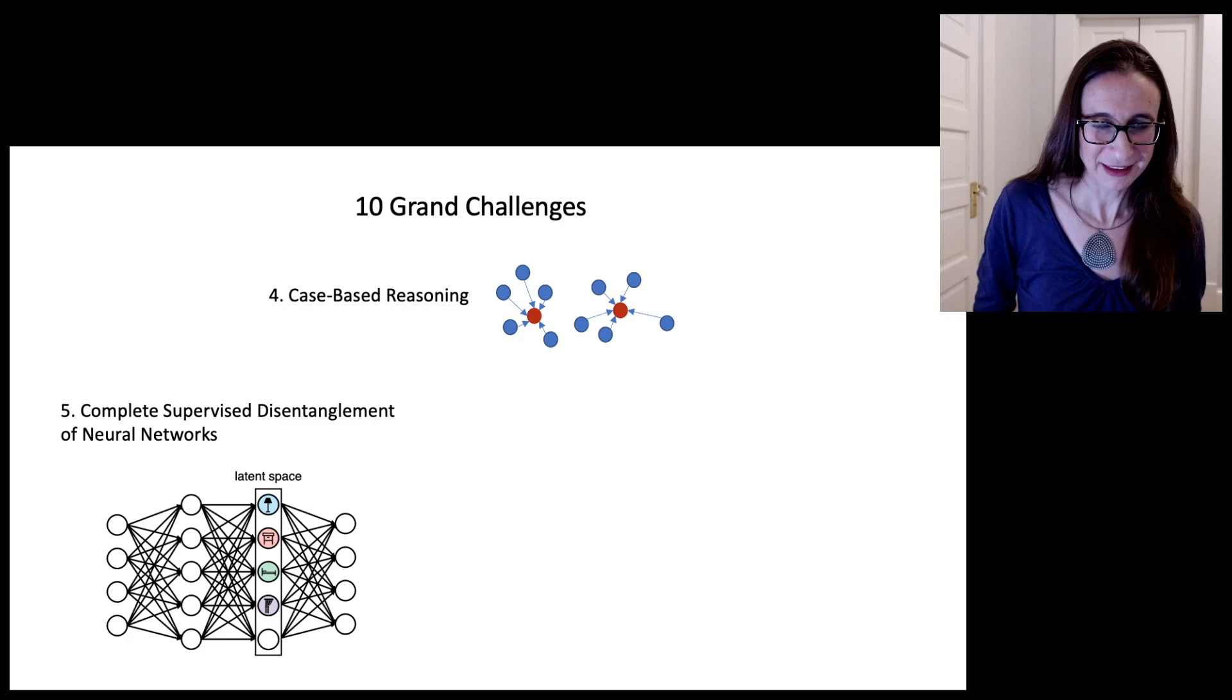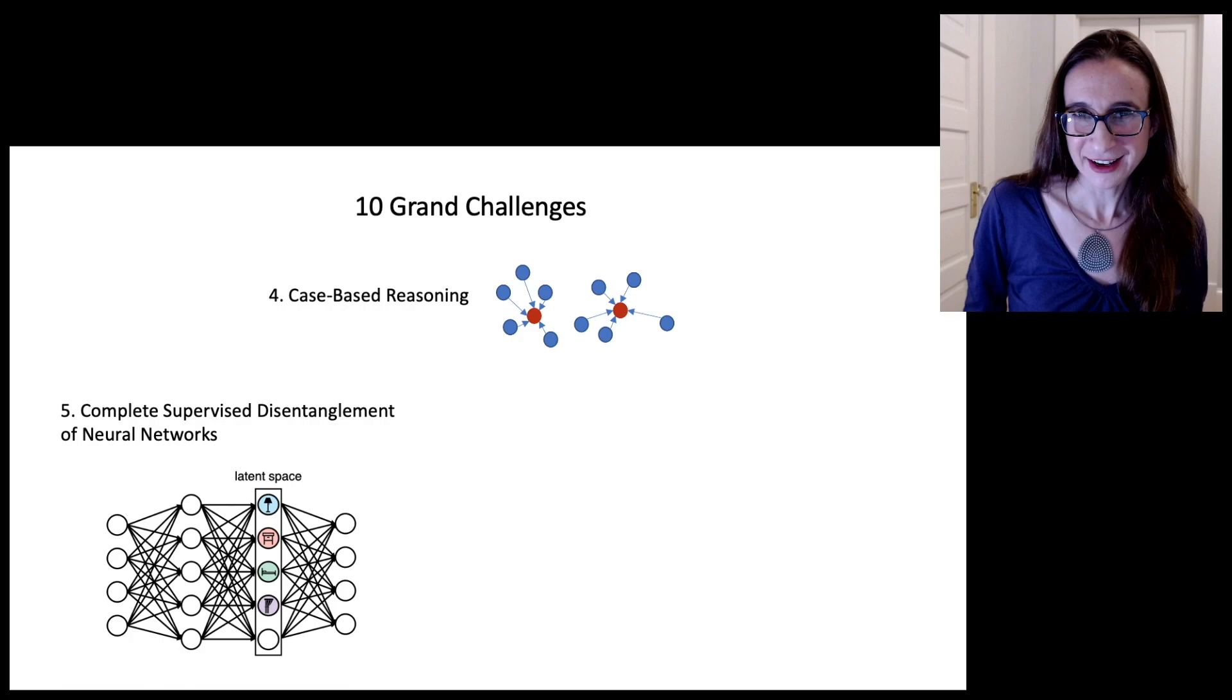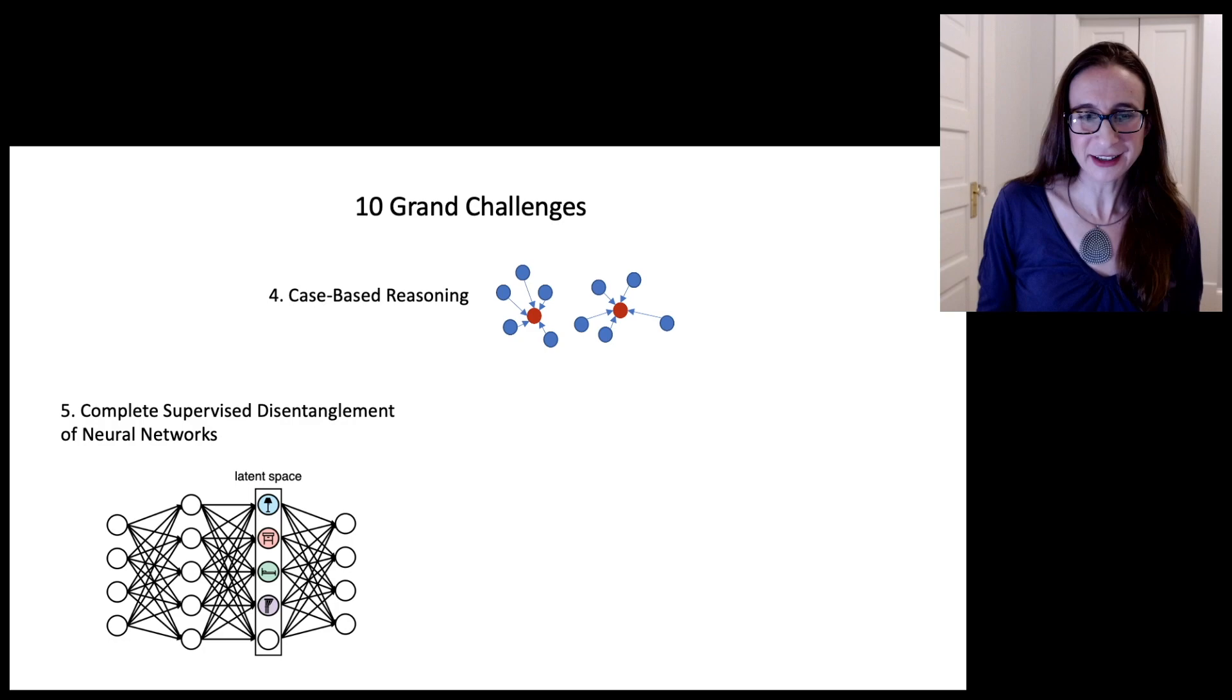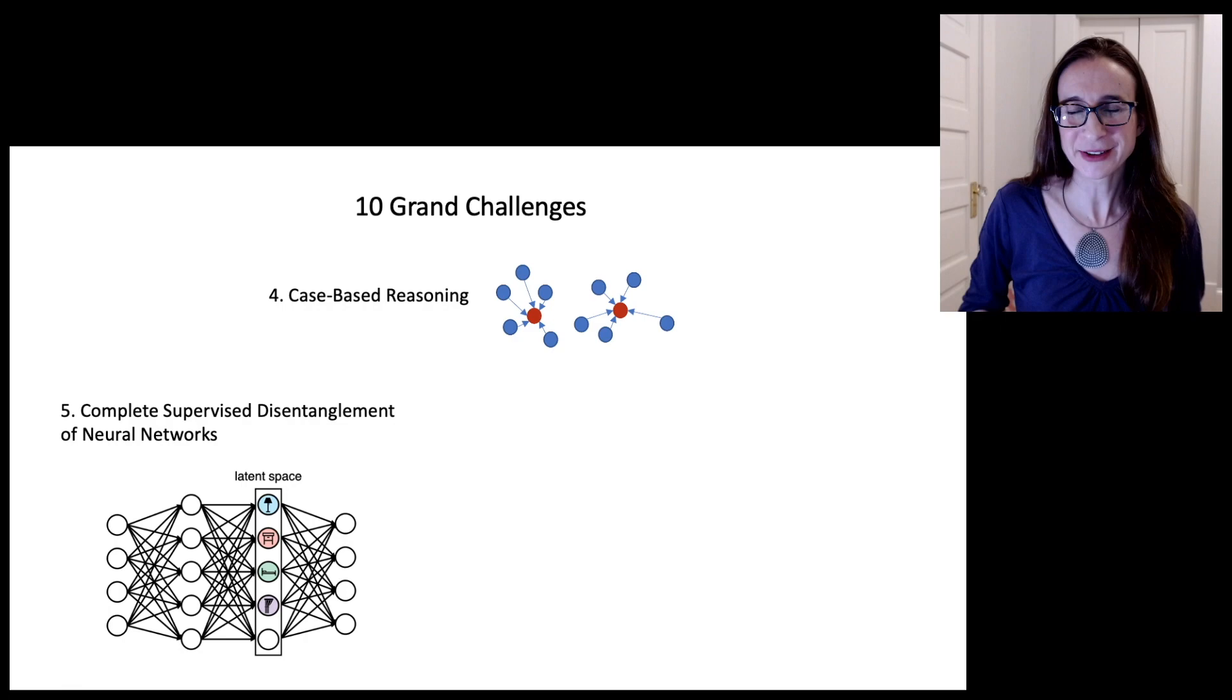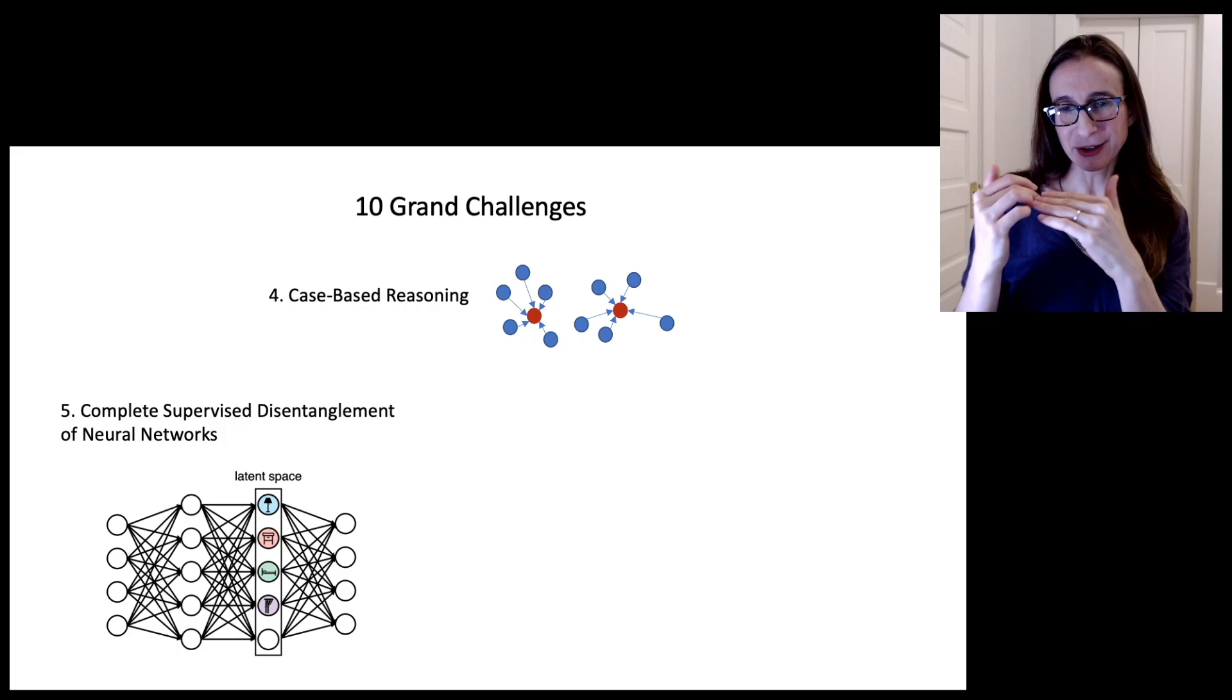The fifth one is complete supervised disentanglement of neural networks, for computer vision mostly we're discussing here. And the idea for this is that you want different types of information to travel through the network through very specific neurons. So you might want to create a neuron that's like a grandmother neuron, or a neuron that's like an airplane neuron, so that all the information about airplane that the network is using to make a prediction goes through that one neuron.